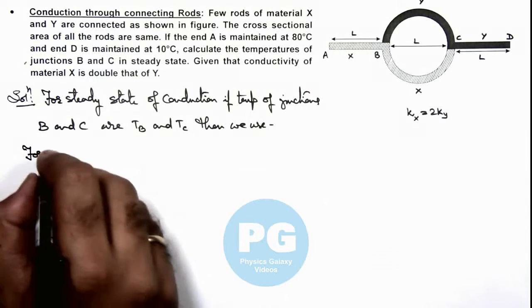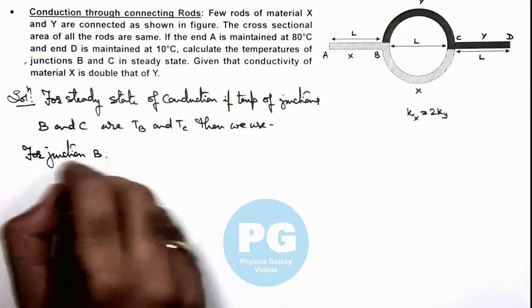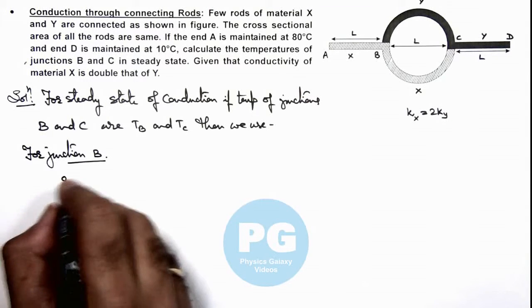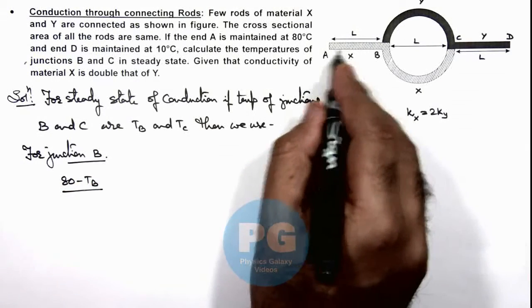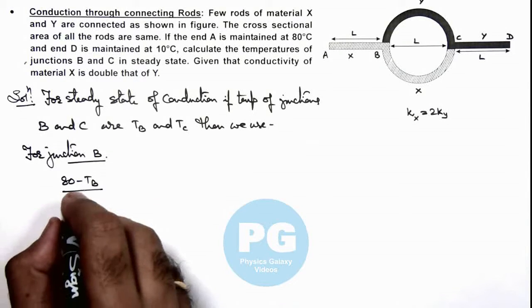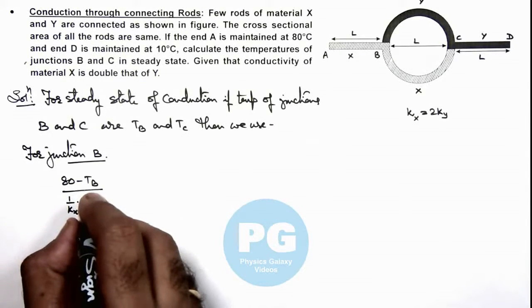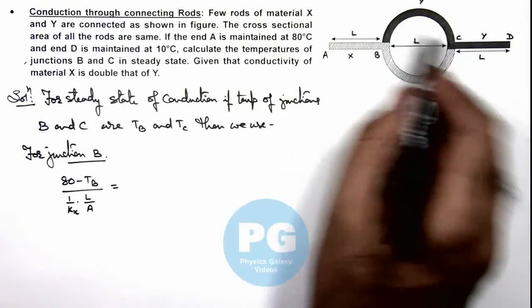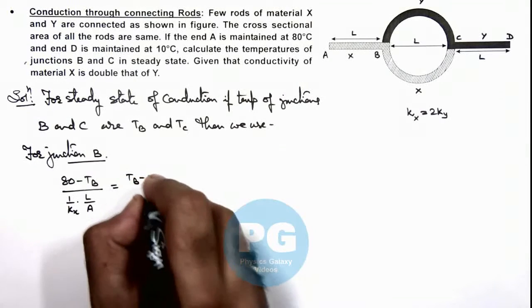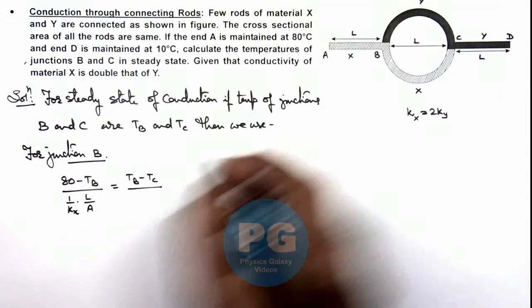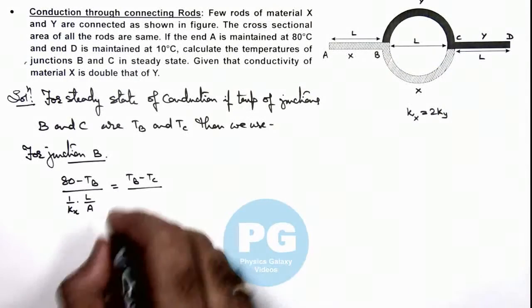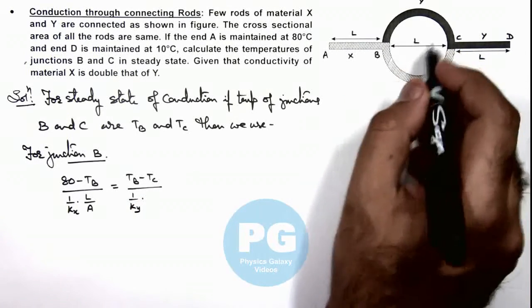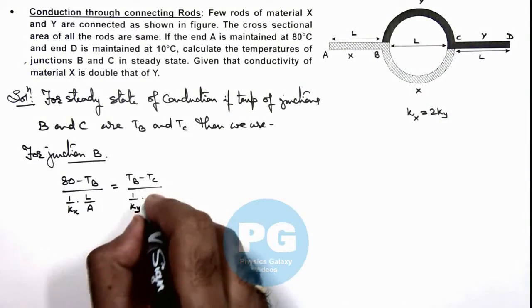So here we can write for junction B, the amount of heat which is conducted from A to B, the rate can be given as 80 minus TB divided by the thermal resistance of the rod AB, which can be written as 1 by kx multiplied by L by A. And that should be equal to the amount of heat which is going from B to C through these two paths.